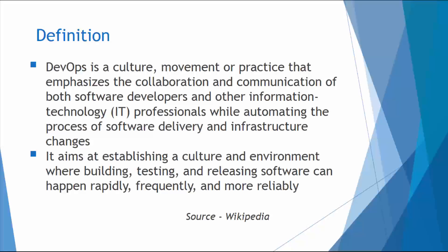The ops side and the dev side go hand in hand. DevOps aims at establishing a culture and environment where building, testing, and releasing software can happen rapidly, frequently, and more reliably. You also need to build automation, which is especially important as we move towards the microservices architecture and away from the monolithic app architecture.